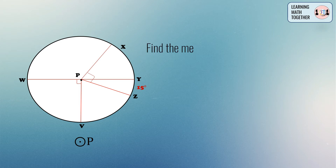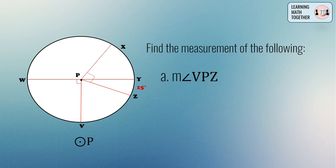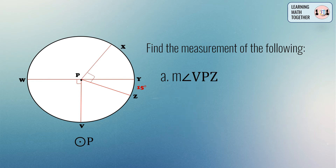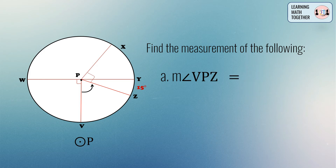We need to identify the following: the measurement of angle VPZ, the measurement of arc VW, the measurement of arc XY, and the measurement of angle XPW. Let us focus on the first one — the measurement of angle VPZ.